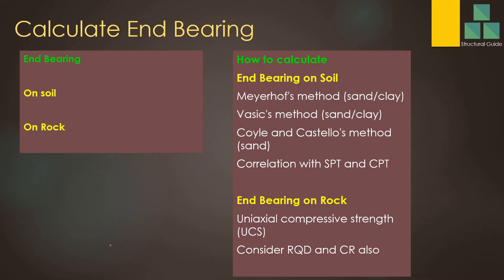End bearing in soils can be calculated using the Meyerhof method, Franki's method, the Coyle and Castello method, and correlations between SPT and CPT values. The end bearing of the rock or soil can be determined using these referenced methods found in geotechnical literature.